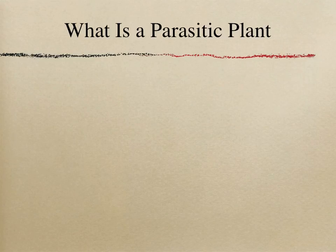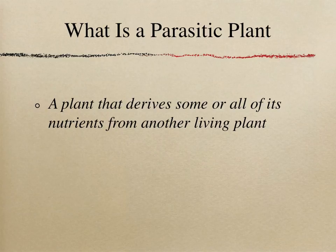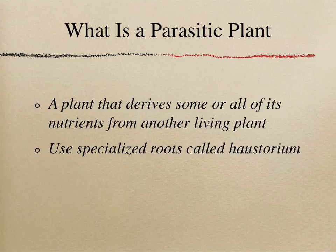The first subject we will talk about is what a parasitic plant is. A parasitic plant is a plant that derives some or all of its nutrients from another living organism. This means that parasitic plants do not use photosynthesis to produce food like all other plants. They use a specialized root form called a haustorium to leach nutrients from the roots of a host plant.